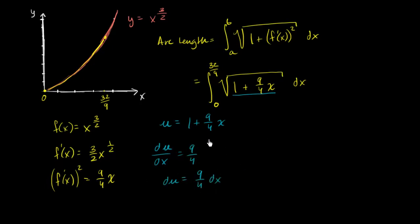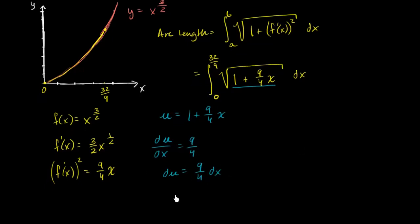Or we could say dx, or we could say, let me scroll down a little bit. We could say dx is equal to, I'm just going to multiply both sides times four ninths, is equal to four ninths du. And then we just have to change the bounds of integration.